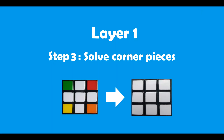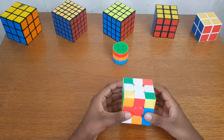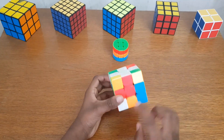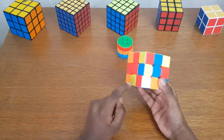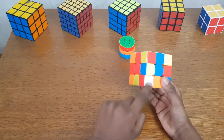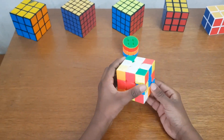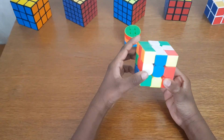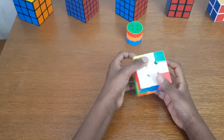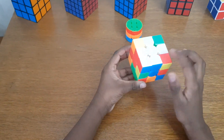We are in the last step in solving the white layer. Here we will fix the corner pieces. Let's pick this red and blue corner piece and place it in the bottom layer between red and blue. Move the corner piece away, turn left to fix. The corner piece — turn the left back. You can see the corner piece is fixed.